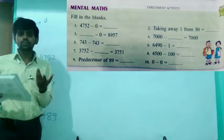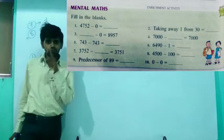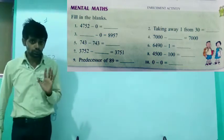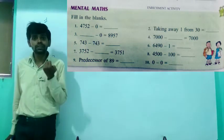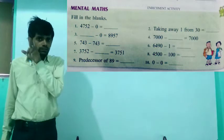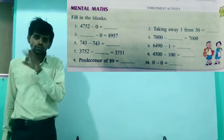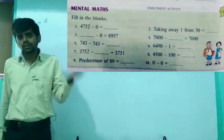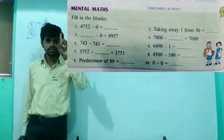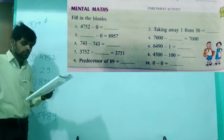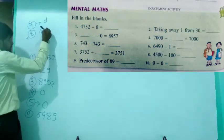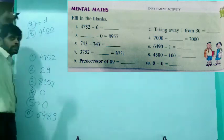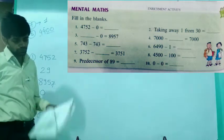The eighth question: subtracting 100 from a number. If you subtract 100 from any number, the digit at the hundreds place will decrease by 1 — the tens and ones places remain as they are. So the eighth answer is 4400: the hundreds digit decreases by 1, while the other digits stay the same.